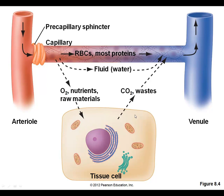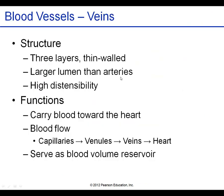Lymphatic vessels can take larger molecules because they have bigger gaps between their endothelial lining compared to capillaries. Just as exchange happens between blood and the interstitial space through the capillary wall, there is another exchange between the interstitial space and the cells themselves — where oxygen goes to the cells and carbon dioxide is collected.